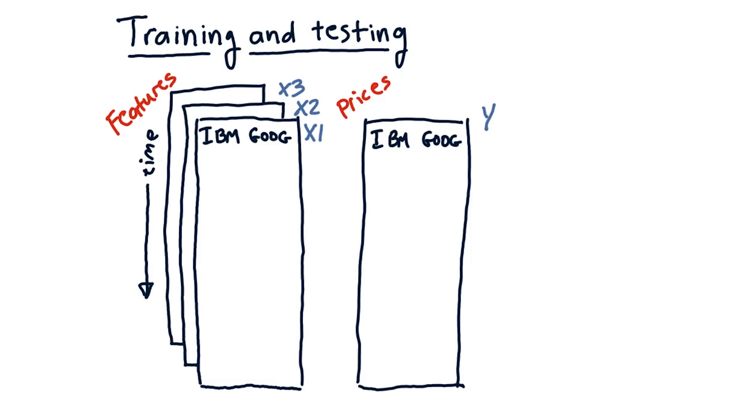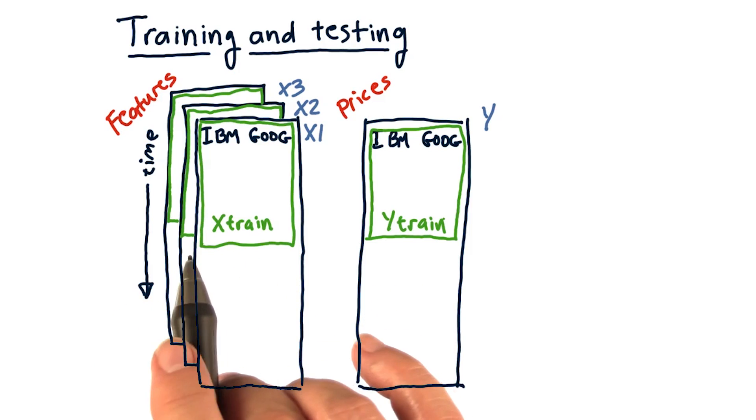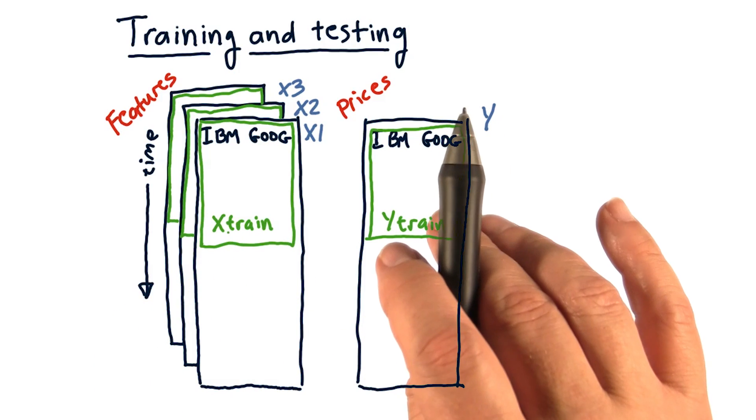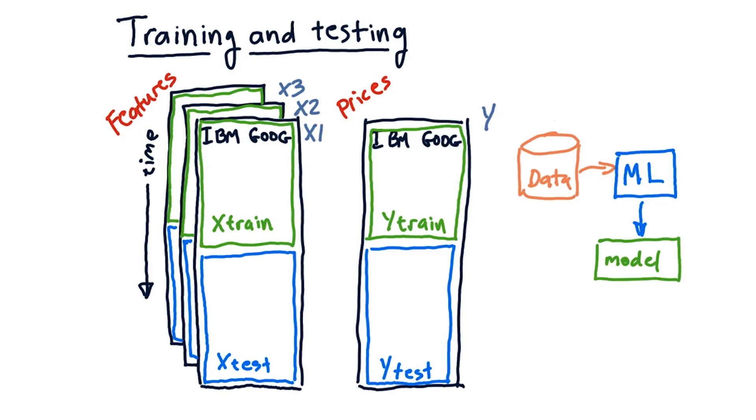This is a very important and essential technique. We'll call the x data that we use for training x train, and the y data that we use for training y train. Similarly, the data we'll test on will be split into x and y sections, x test and y test.